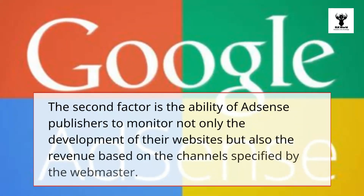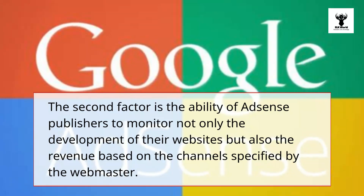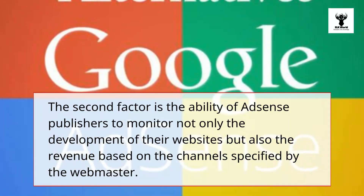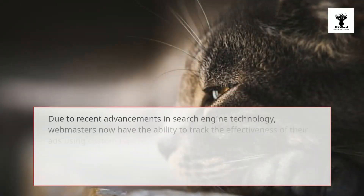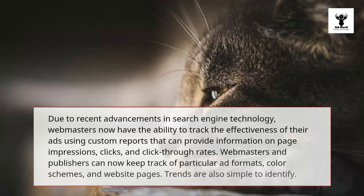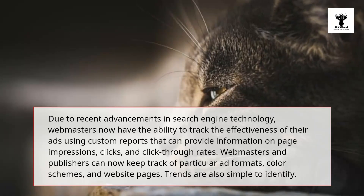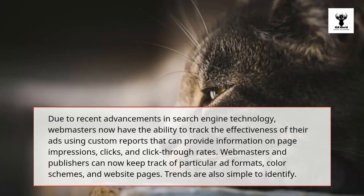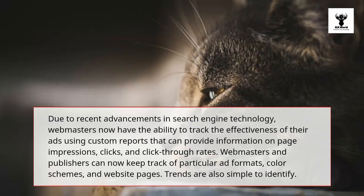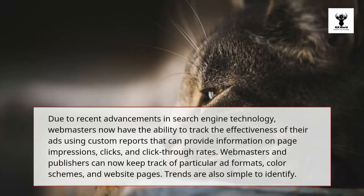The second factor is the ability of AdSense publishers to monitor not only the development of their websites but also the revenue based on the channels specified by the webmaster. Due to recent advancements in search engine technology, webmasters now have the ability to track the effectiveness of their ads using custom reports that can provide information on page impressions, clicks, and click-through rates. Webmasters and publishers can now keep track of particular ad formats, color schemes, and website pages.